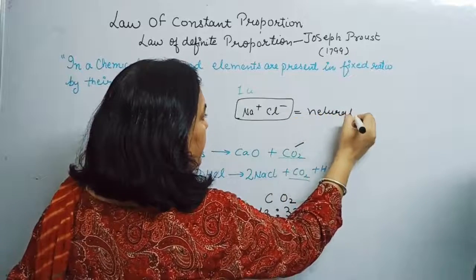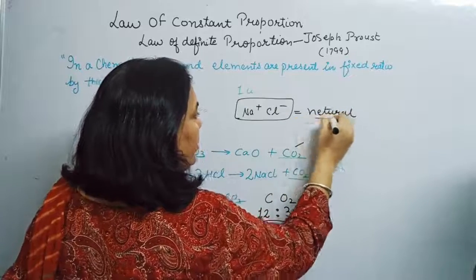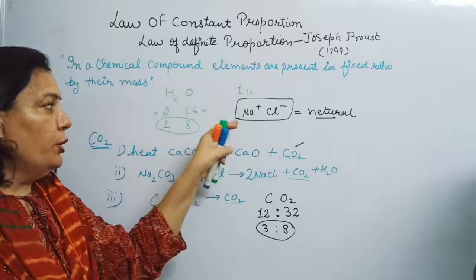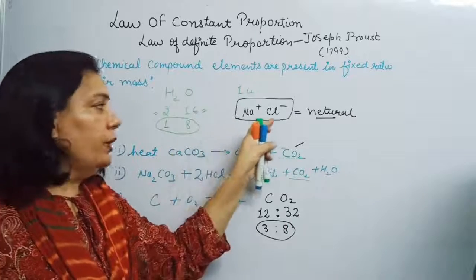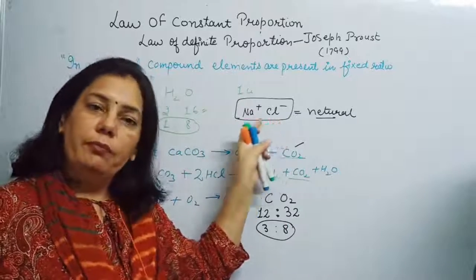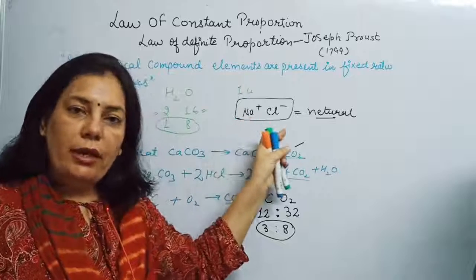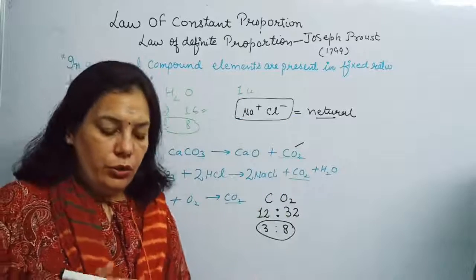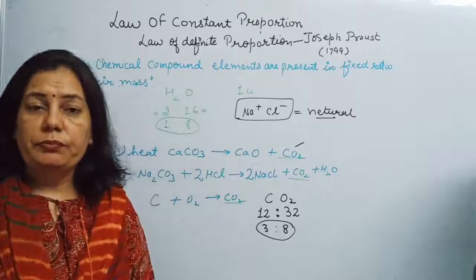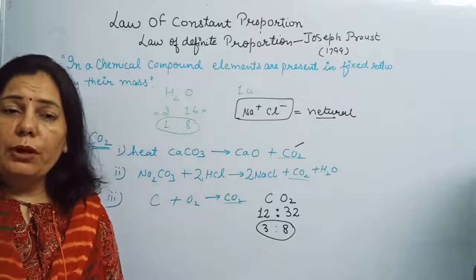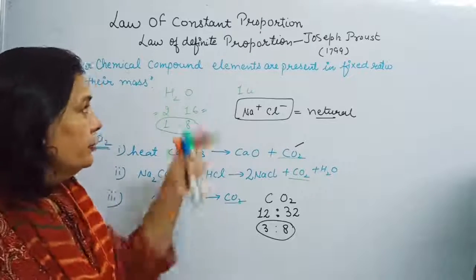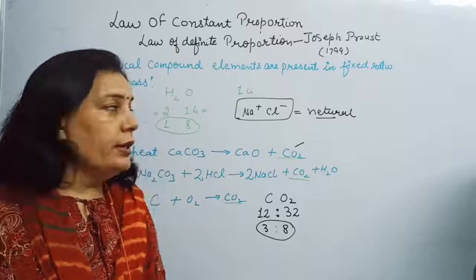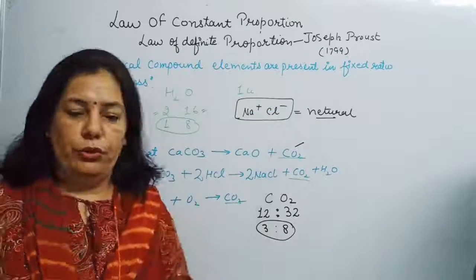Ionic compounds are neutral in nature because the one unit positive charge of sodium and the one unit negative charge of chlorine cancel each other out. So these two concepts were provided by the law of constant proportion, given by scientist Joseph Proust.